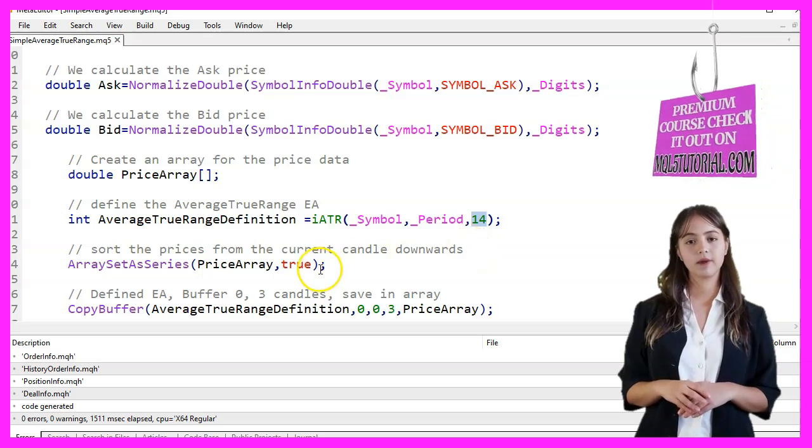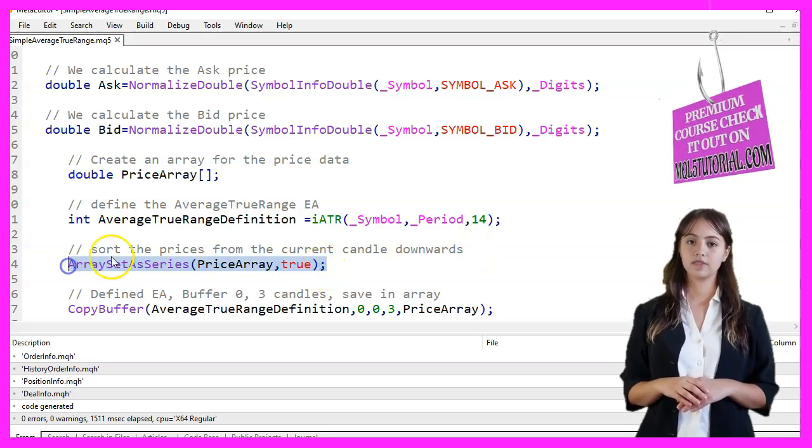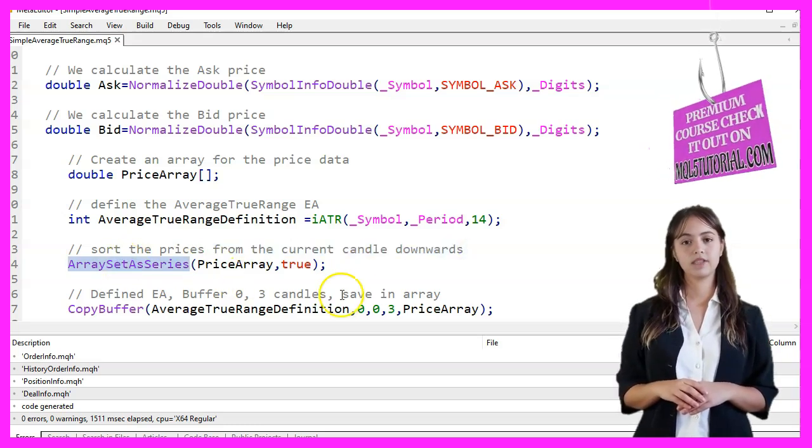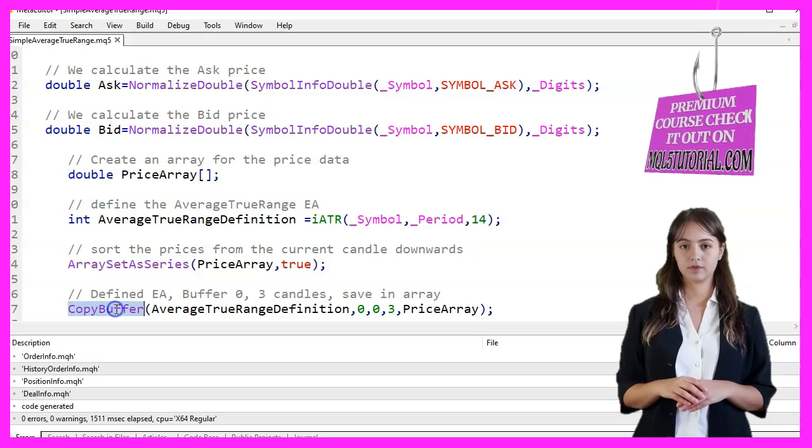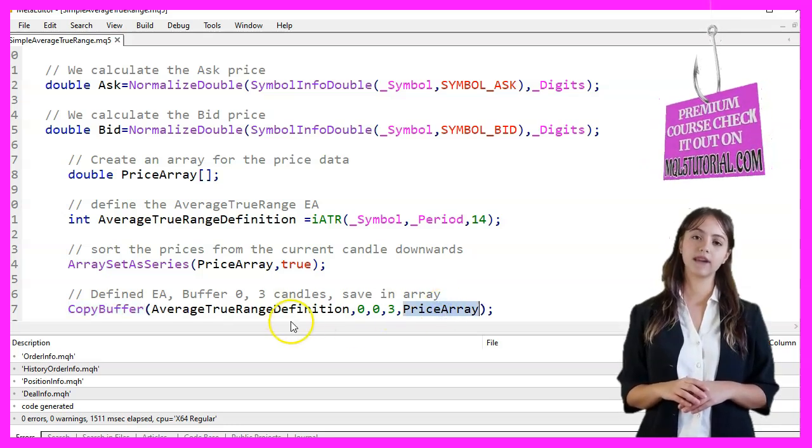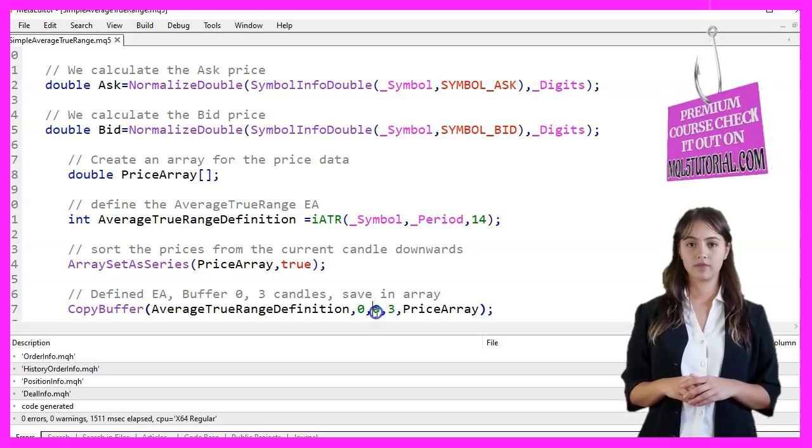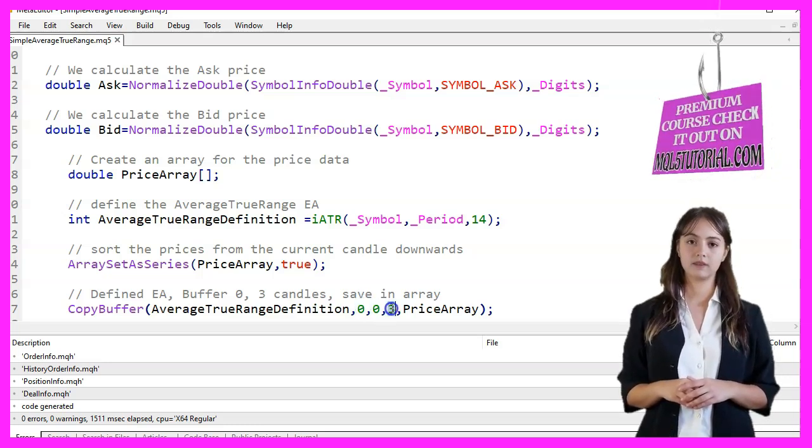We sort the prices in the PriceArray from the current candle downwards using ArraySetAsSeries. We then copy the ATR values into PriceArray using the CopyBuffer function, specifying the Average True Range definition, buffer 0, starting from the current candle, and copying 3 candles.